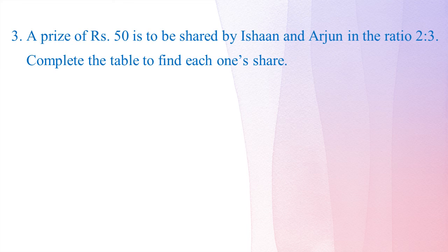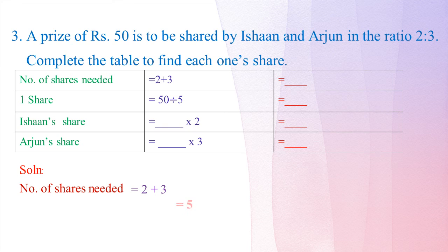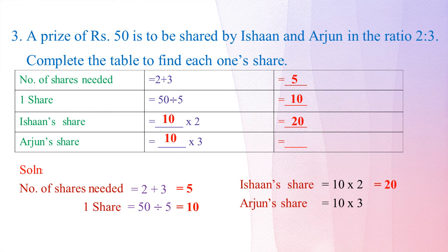Rs. 50 is to be shared by Ishan and Arjun in the ratio 2 is to 3. Complete the table to find each one's share. Number of shares needed equals 2 plus 3 equals 5. One share equals 50 divided by 5 equals Rs. 10. Ishan's share equals 2 multiplied by 10 equals Rs. 20. Arjun's share equals 3 multiplied by 10 equals Rs. 30.